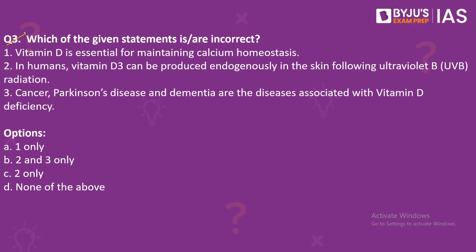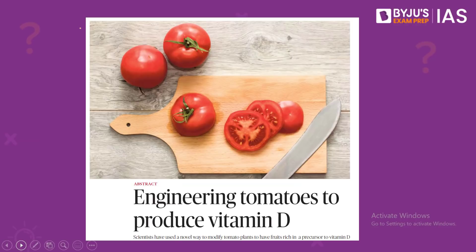Moving on to question number 3: which of the given statements is or are incorrect? Number 1: Vitamin D is essential for maintaining calcium homeostasis. Number 2: In humans, Vitamin D3 can be produced endogenously in the skin following ultraviolet B (UVB) radiation. Number 3: Cancer, Parkinson's disease, and dementia are diseases associated with Vitamin D deficiency. The context: scientists have tried to genetically modify tomato plants so that the fruit contains significant amounts of pro-vitamin D3, a precursor from which humans can make Vitamin D.